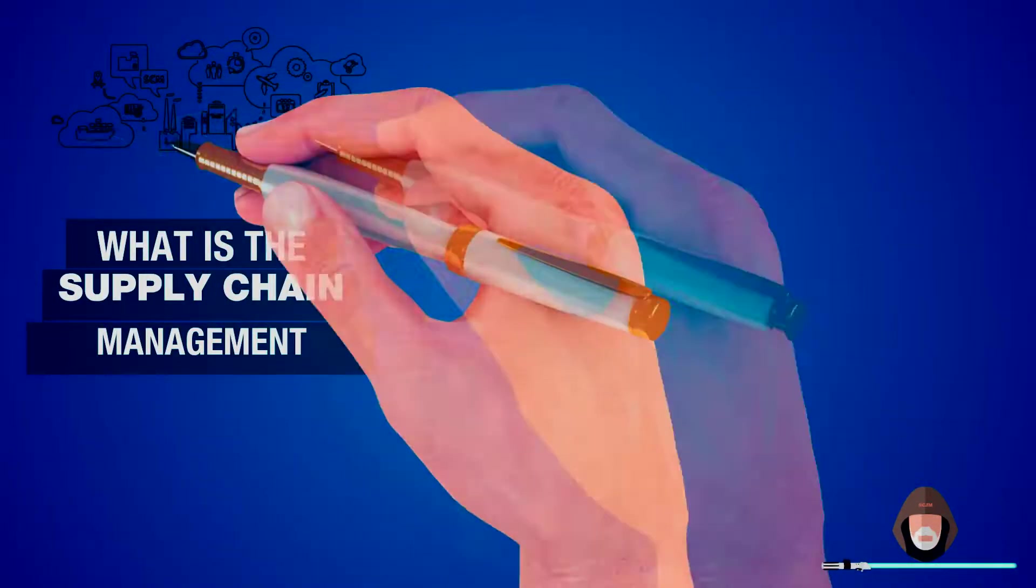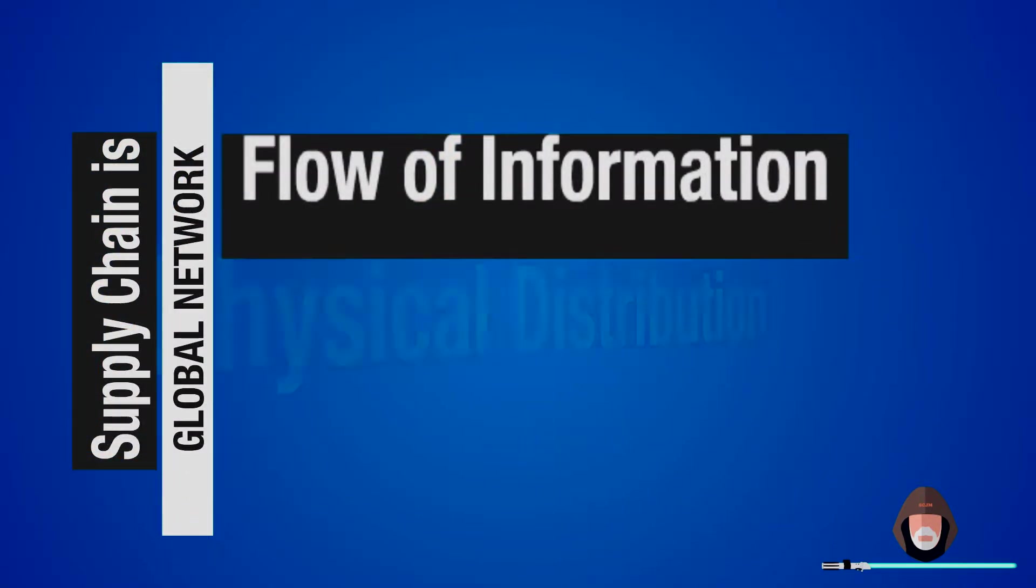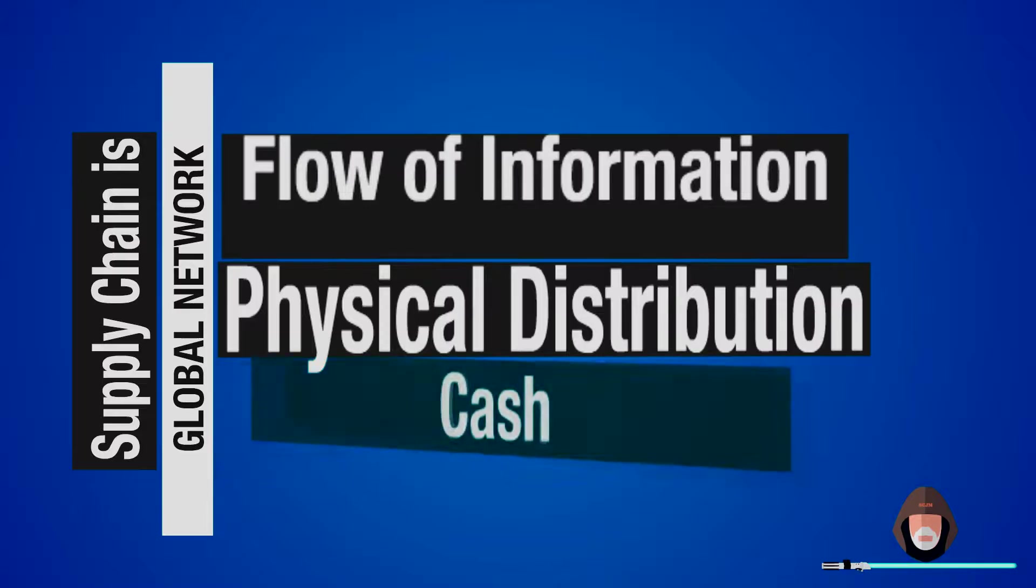According to Apex, the Global Association for Supply Chain Management Professionals, a supply chain is a global network used to deliver products and services from raw material to end customers through an engineered flow of information, physical distribution and cash.